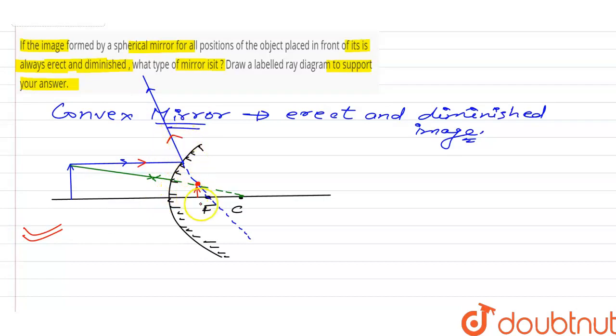Another ray of light incident to the center of curvature will retrace its path. At the point where both refracted rays are intersecting each other, the image is formed. We can say that this image is erect and diminished.